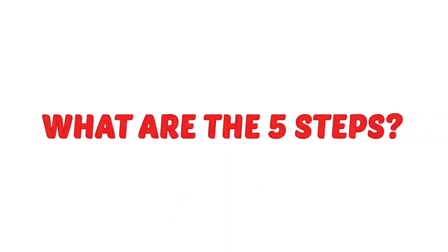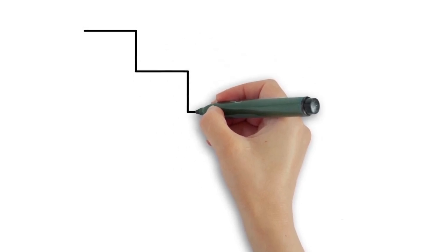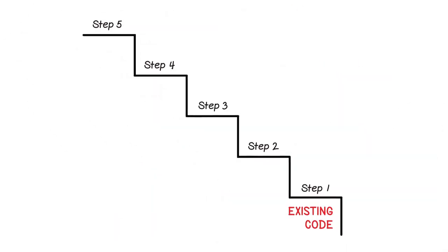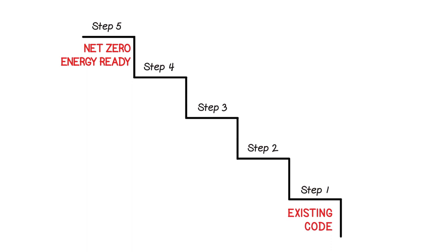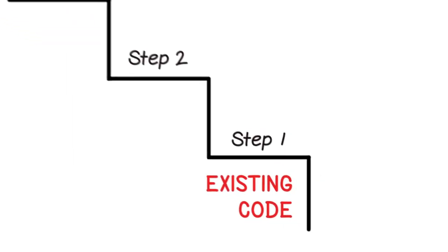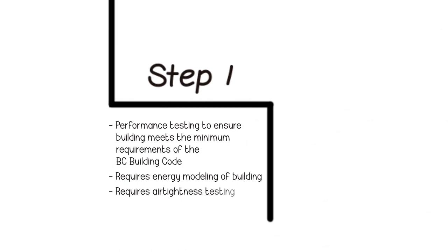So what are the five steps? And how does the BC Energy Step Code work for homes? Picture a hypothetical staircase that takes us from today's energy efficiency levels to the year 2032, when all new construction in the province must meet a net-zero energy-ready level of performance. Step one is enhanced compliance. This means performance testing will be used to identify whether the building meets the minimum energy efficiency performance requirements of the BC Building Code. Adhering to step one creates a quality, well-sealed building envelope.